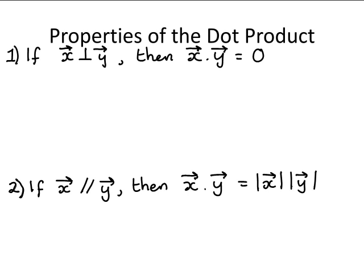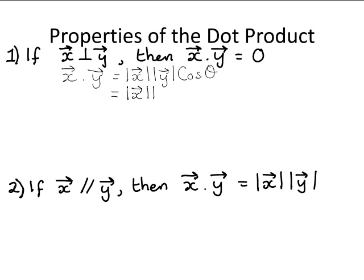Here are some properties of the dot product. If vector x is perpendicular to vector y, then the dot product of vector x with vector y is equal to 0. From the definition of the dot product, vector x multiplied by vector y equals the modulus of vector x times the modulus of vector y times the cosine of the smaller angle between them. If x is perpendicular to y, the angle is 90 degrees, and the cosine of 90 degrees is equal to zero.